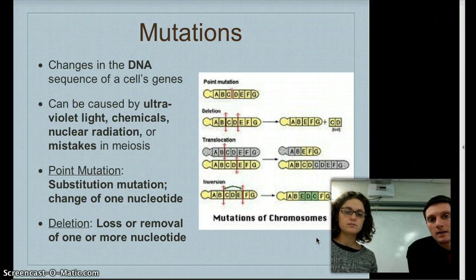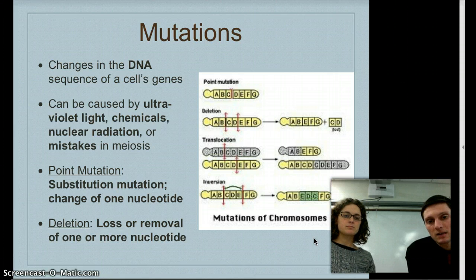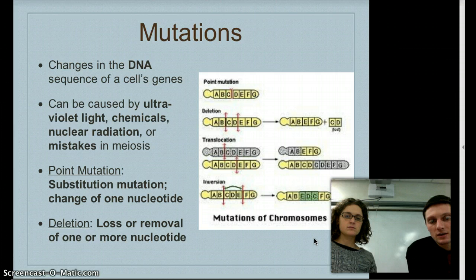Something important to keep in mind is that a mutation can happen to two different things in your body. It can either happen in body cells — like skin cells or red blood cells, which we call somatic cells — and it won't be passed on to your offspring. Or it can happen in gametes like sperm or egg, and if a mutation occurs there, it can be passed on to your offspring.